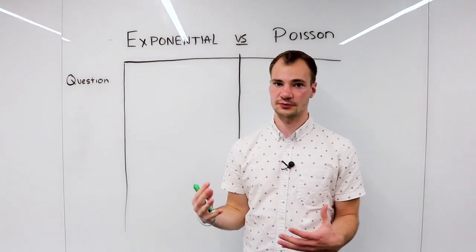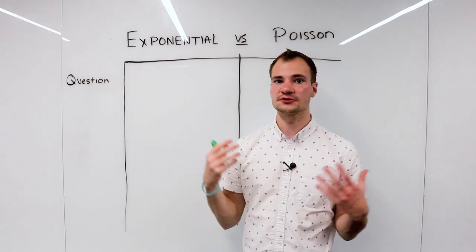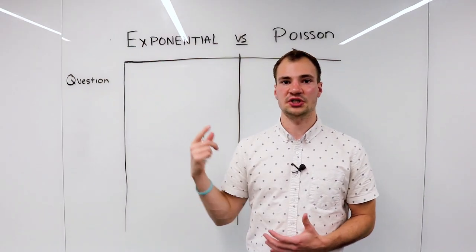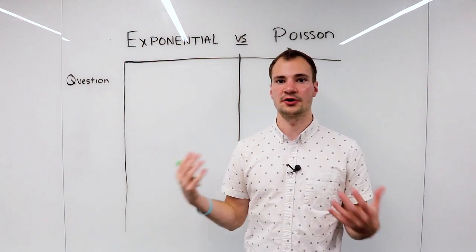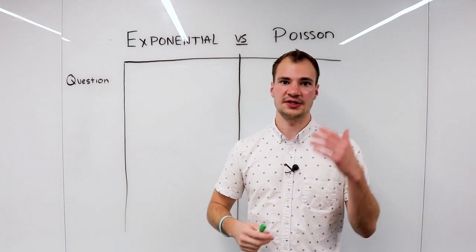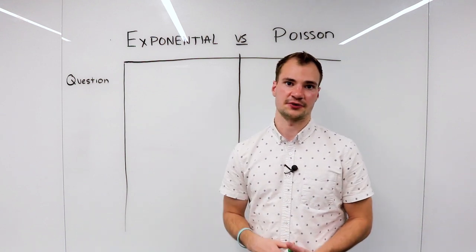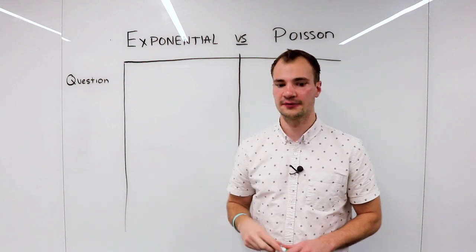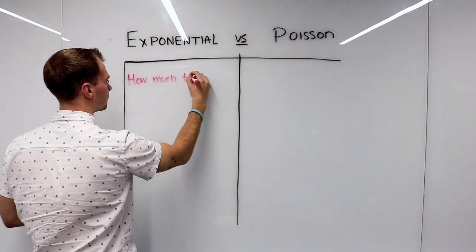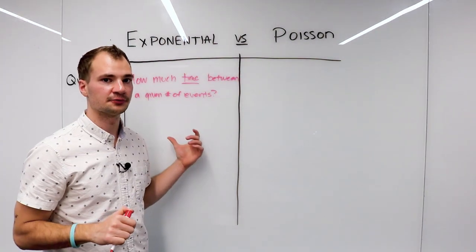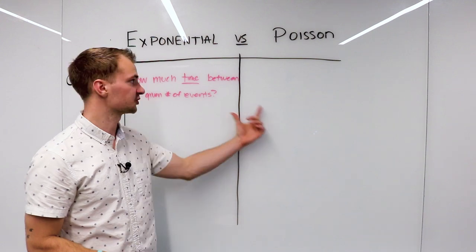So as we do whenever we start a problem, we need to ask ourselves, what are we trying to find? For the exponential, that question is: how much time occurs between a given number of events? That could be between the ninth and tenth person arriving or between the fifth and tenth person arriving. It doesn't have to be just one event.